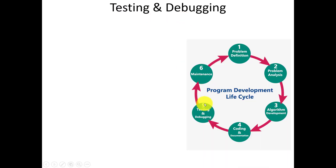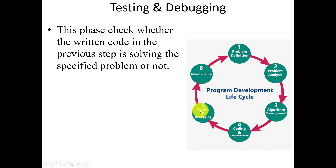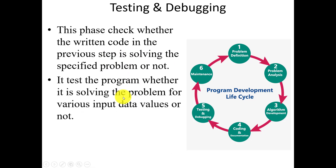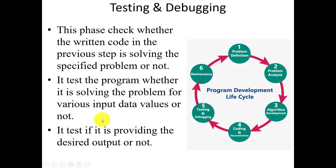The next phase is testing and debugging. The name itself suggests what testing means. Here we check whether the code written in the previous step — coding and documentation — is solving the specific problem or not. We test the programs with various input data to verify whether they produce the desired output. It simply tests our programming code.